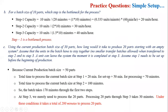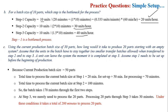Question B asks: if we reduce the batch size from 50 to 10, which bottleneck operation is going to occur? Using the same scenario, we now put batch size 10 instead of 50 and calculate the capacity. We get 20 units per hour for step one, 30 units per hour for step two, and 40 units per hour for step three. So now the slowest operation is step number one.